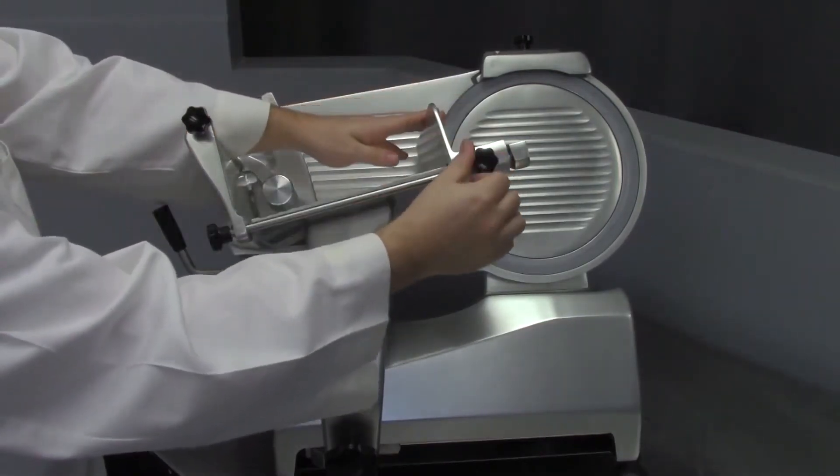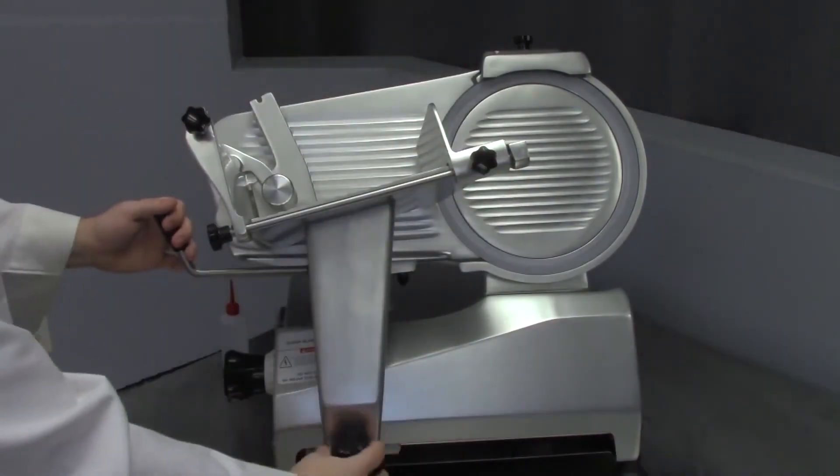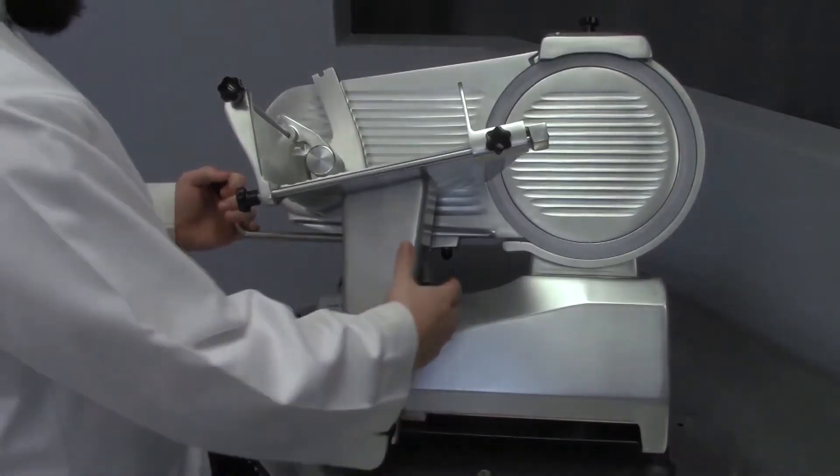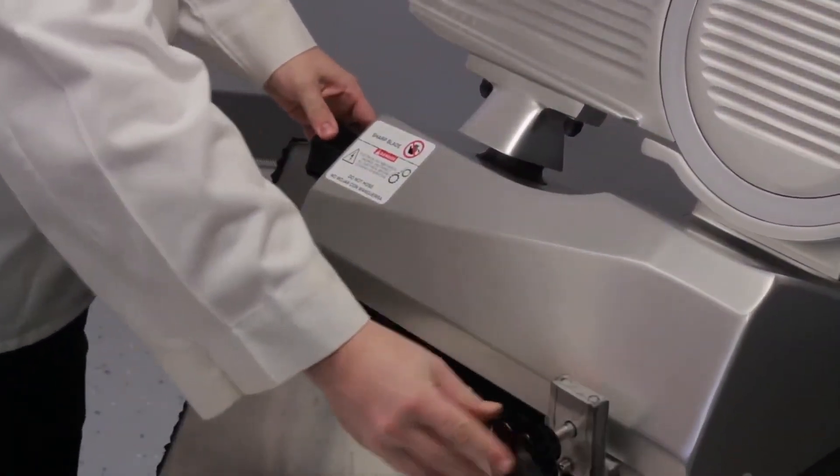Tighten the spacer knob and then loosen the carriage arm knob to remove the carriage. Then, slide the carriage arm forward.